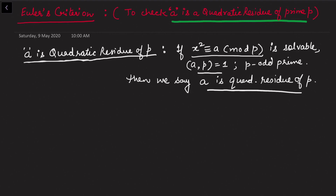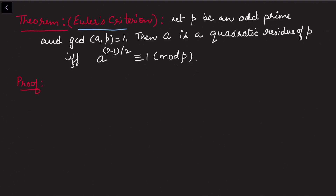Considering this definition, let us state Euler's criteria. Euler's criteria says: let p be an odd prime and gcd(a, p) = 1. Then a is a quadratic residue of p if and only if the congruence a^((p-1)/2) ≡ 1 (mod p) is satisfied. Let us take an example to explain this theorem before we move to the proof.